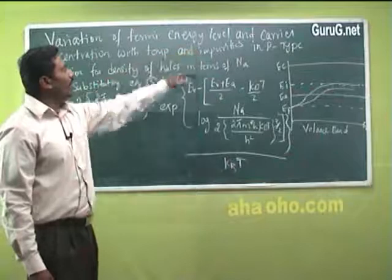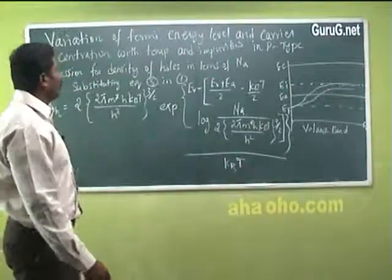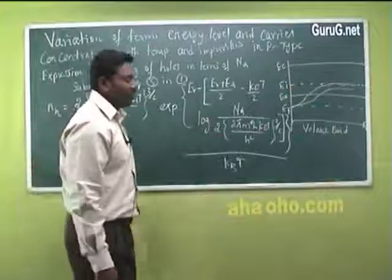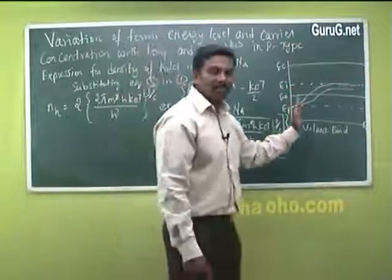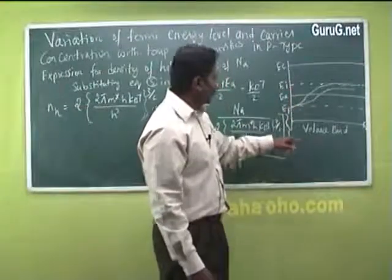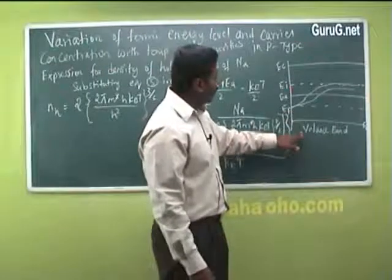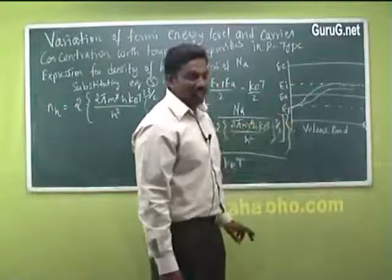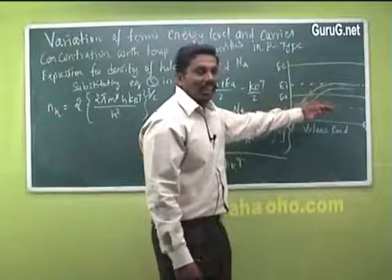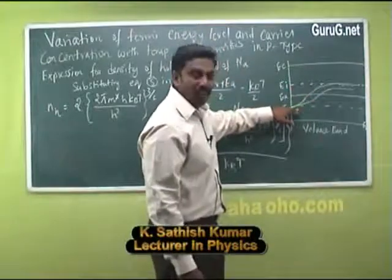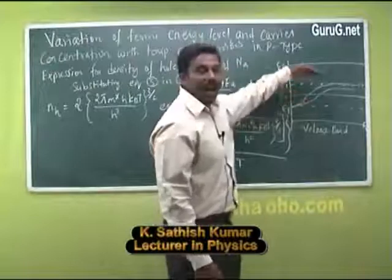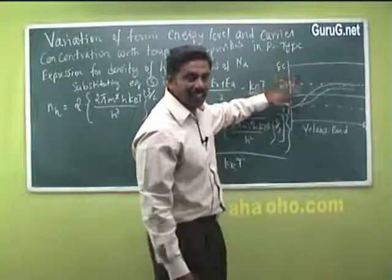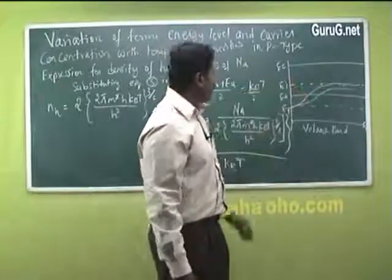Variation of Fermi energy level and carrier concentration with temperature and impurity in a p-type semiconductor. In the band structure of a p-type semiconductor at 0 Kelvin, the Fermi energy level lies exactly between the valence band and the acceptor energy level. When the temperature increases, the Fermi energy level slowly shifts and it approaches a maximum of EI, where EI is the intrinsic Fermi energy level region.